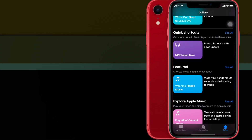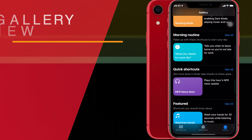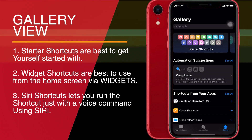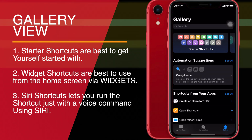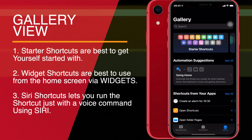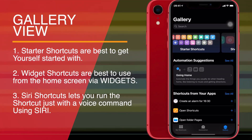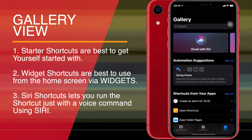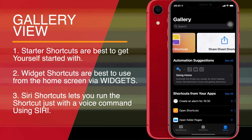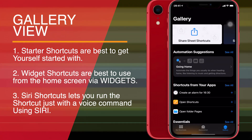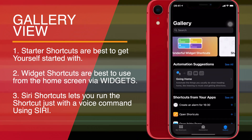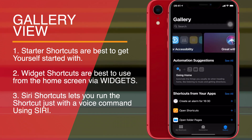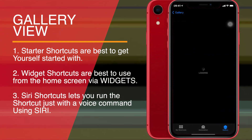The third tab is Gallery, which we'll be covering in this video. Here you can find built-in shortcuts and automations provided by Apple. There are many options to choose from, including starter shortcuts, shortcuts for accessibility, shortcuts that work great with Siri, shortcuts for widgets, shortcuts you can use from share sheets, and many more.